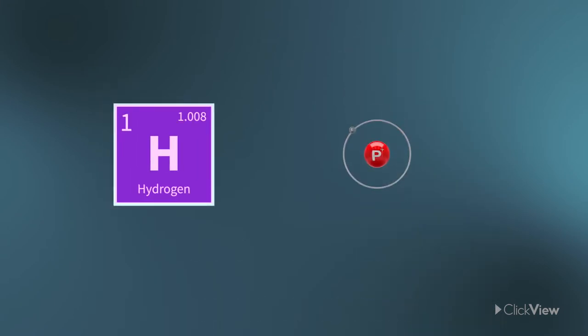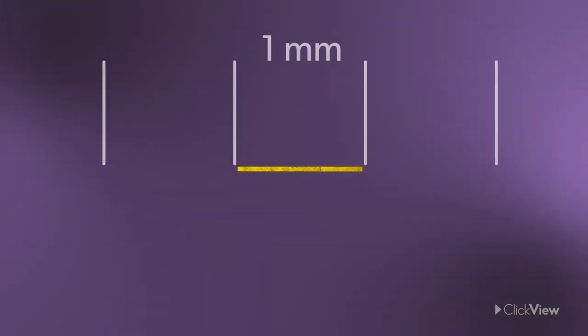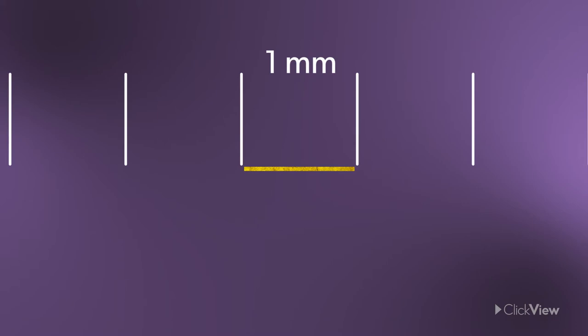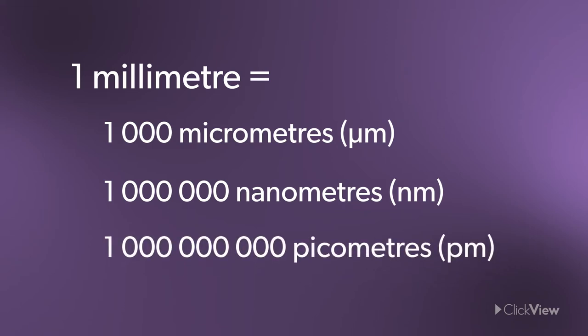The smallest atom hydrogen is closer to just 50 picometres. This scale is so small hundreds of millions of atoms could fit inside a one millimetre gap on your ruler. These invisible units from fractions of a millimetre down to picometres are difficult to imagine.